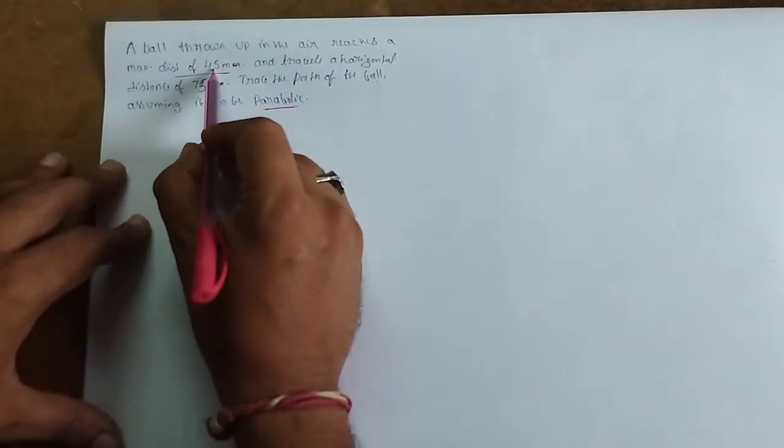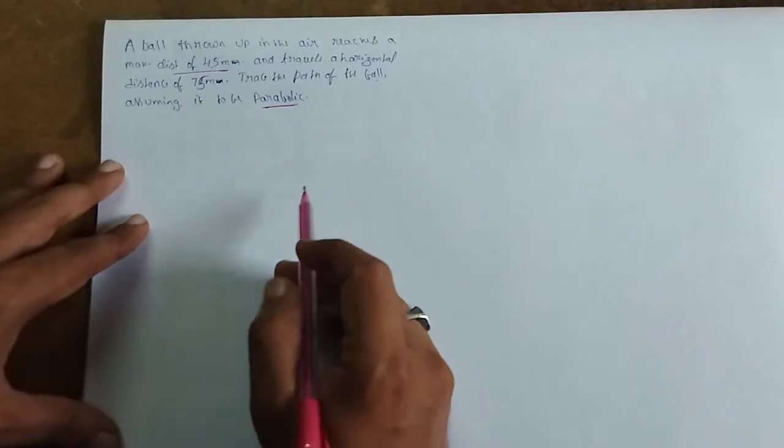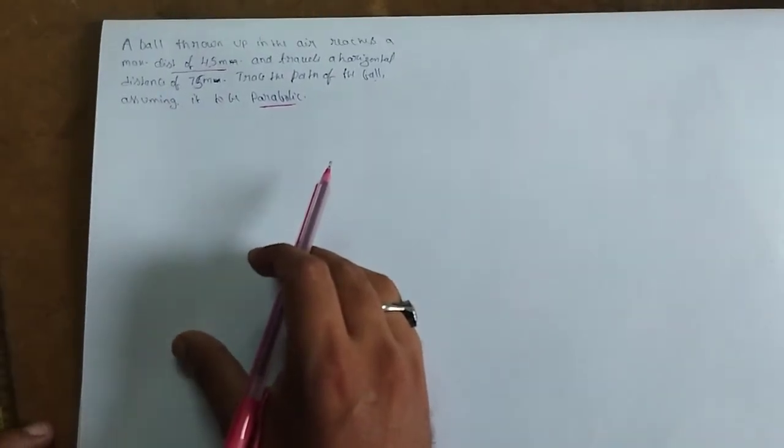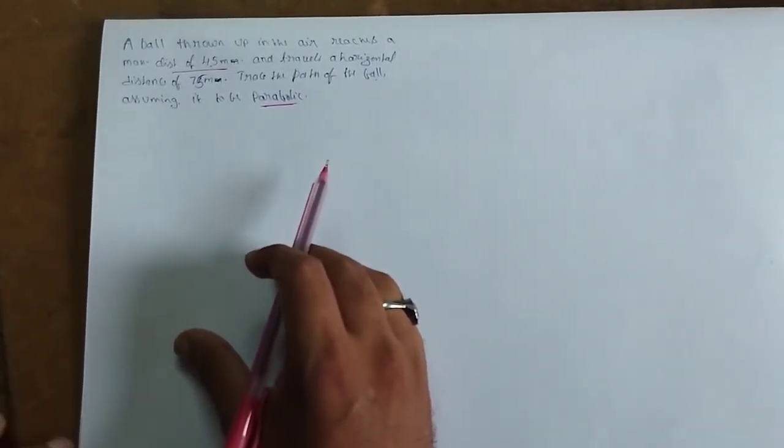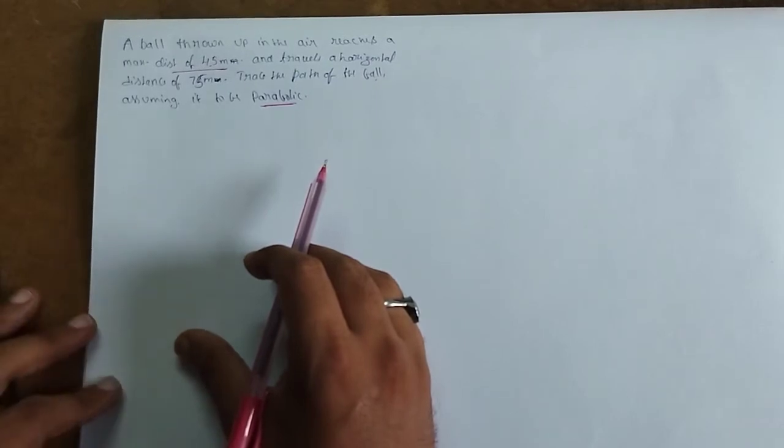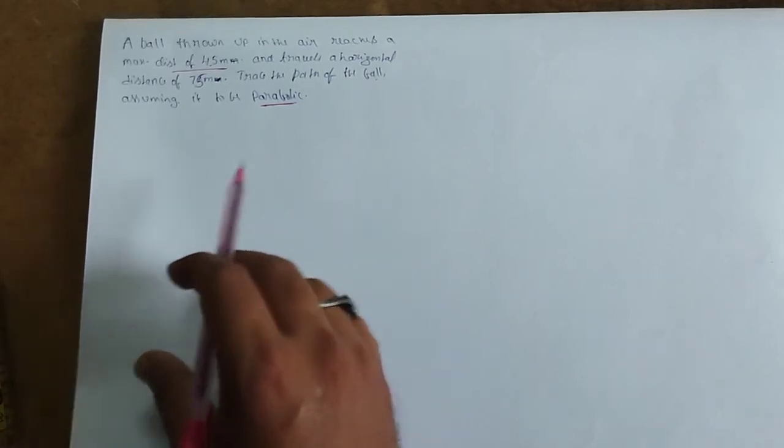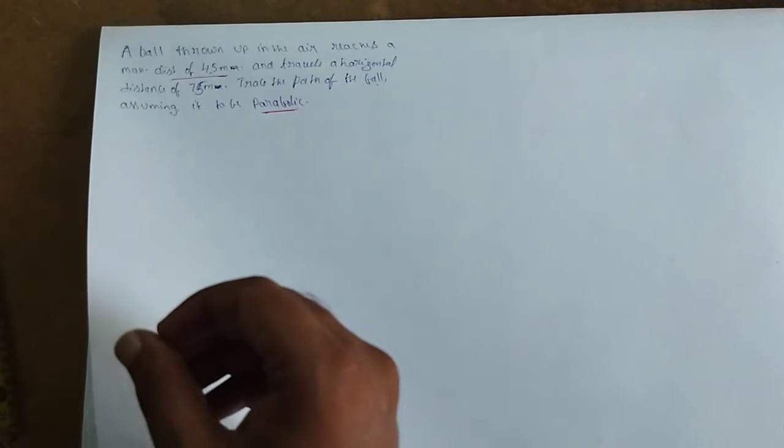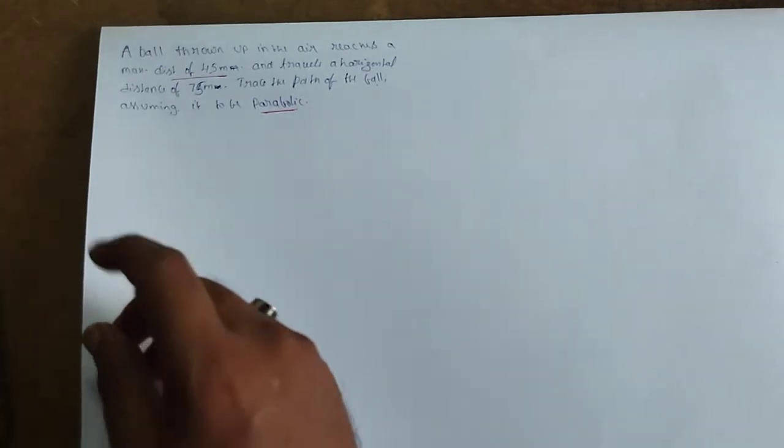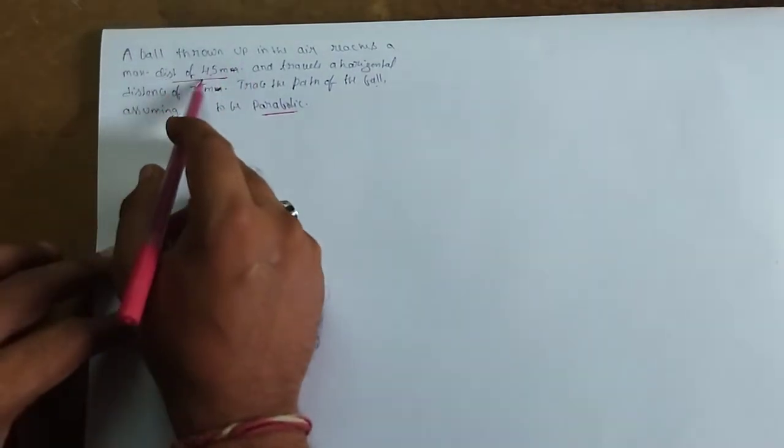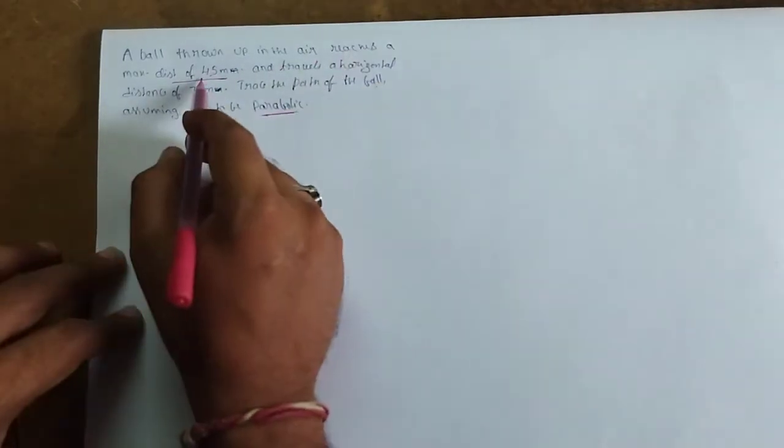So the parabola covers a horizontal distance on a center axis. We need to draw tangents. The ball travels upward and covers this path. If the problem asks us to draw this, we need to approach it systematically.